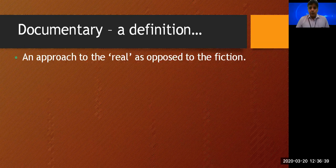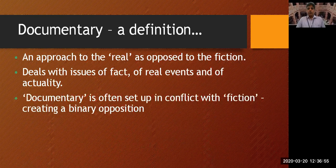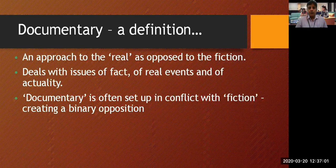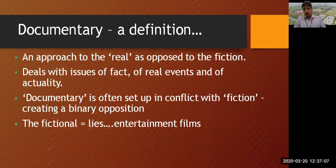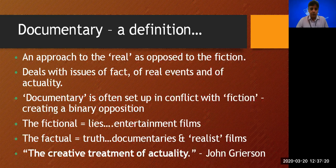Fiction films usually have characters, actors, and a storyline. We have a storyline in documentary as well, but that story is real and performed by real people who are part of that story. It deals with issues of fact, real events, and actuality. Actuality is the single most important component of documentary filmmaking. The documentary is often set up in conflict with fiction, creating a binary opposition — fiction lies in entertainment films, and factual truth in documentaries and realist films.